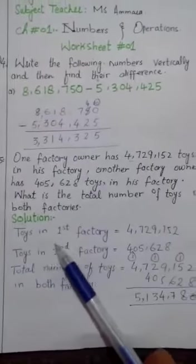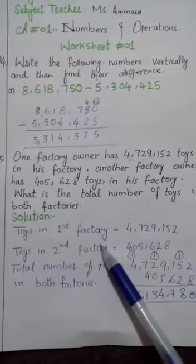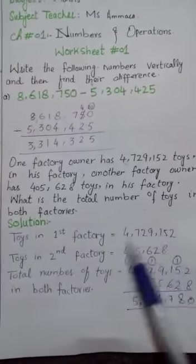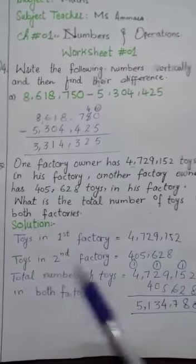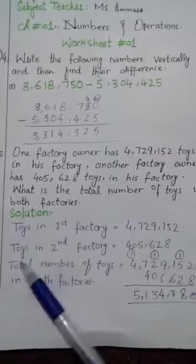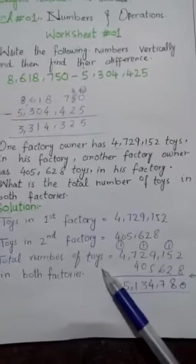This is the word problem. First, we will write toys in the first factory—this number of toys—and in the second factory, these numbers. We can find the total number of toys by adding these values, same like question number 3. We will add both values. First, write the first